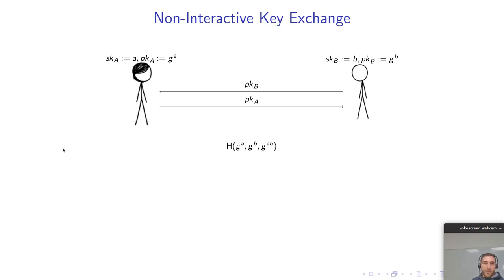Now there's a slight variant of the Diffie-Hellman key exchange called hashed Diffie-Hellman and here the shared key G to the AB is additionally hashed using hash function H. Also here we include the public keys.